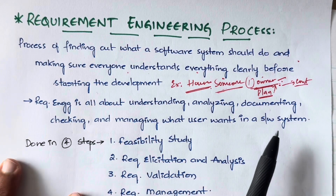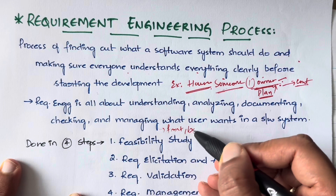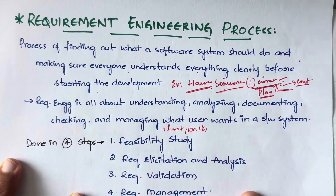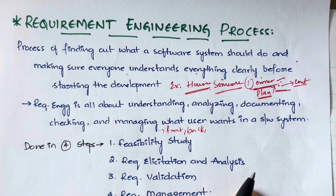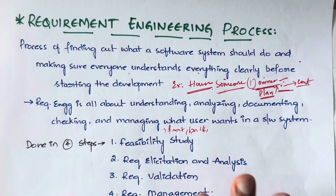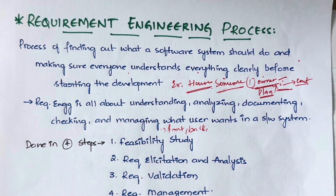You also have to manage the requirements. You will have different requirements — front-end requirements, back-end requirements. Using the house example, you need a plumber, an electrician, a carpenter, painting people, and so many others. Whether you have all those people available or not, whether you can bring them together and complete the project — all of that is handled in the requirement engineering process.